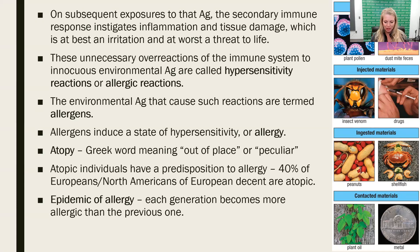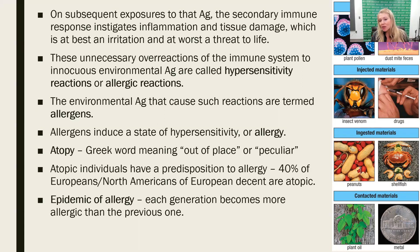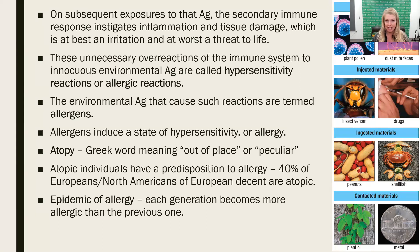We know that the secondary immune response is fast, strong, and it will attack these antigens and try to eliminate them from the body — even though it doesn't matter if they're in the body. These are unnecessary reactions, overreactions of the immune system. And because of that, we call them hypersensitivities. We can also call them allergic reactions. Both of those two things mean the same thing: a hypersensitivity or an allergic reaction.